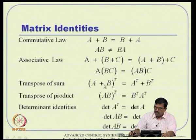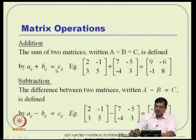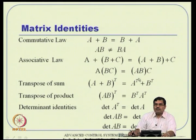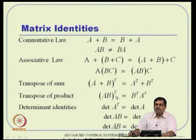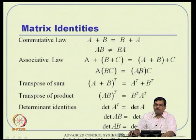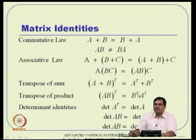The transpose of a sum: (A + B) transpose equals A transpose plus B transpose, which is apparent from element-by-element addition. Interestingly, the transpose of a product reverses the sequence: (AB) transpose equals B transpose times A transpose — not A transpose times B transpose. This is a critical observation, especially regarding the product rule.